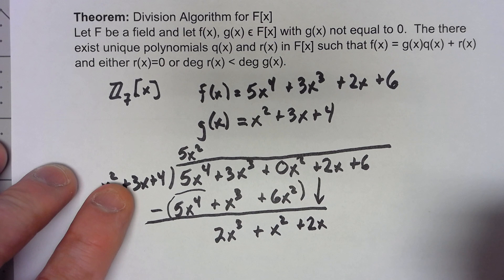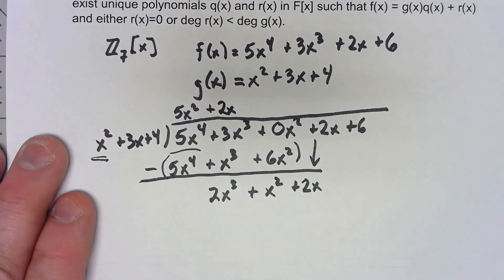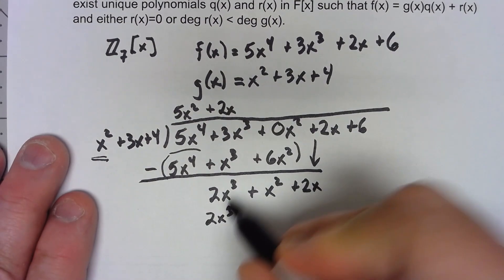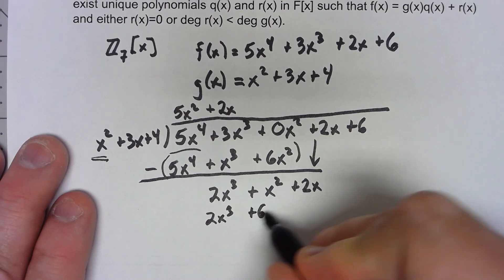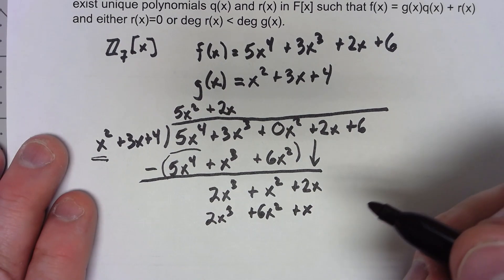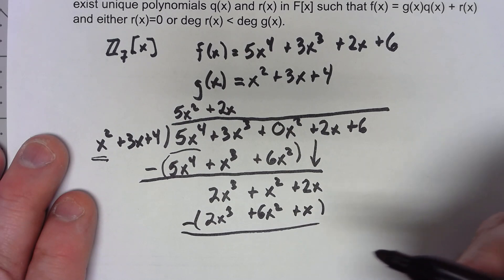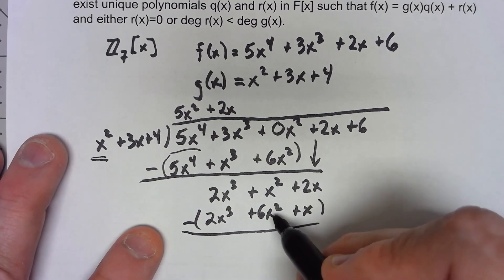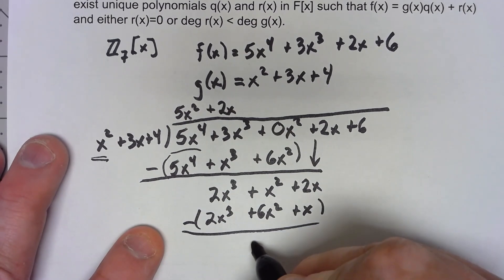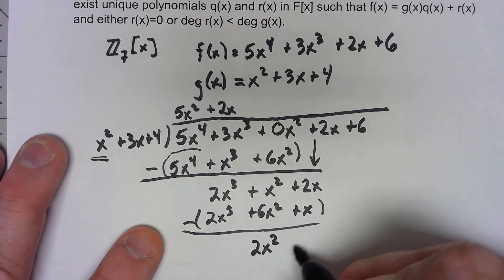The next thing that goes up top, we're going to have plus 2x. 2x cubed, plus 6x squared, plus 8x is really plus x, and we subtract. 2x cubed minus 2x cubed cancels. x squared minus 6x squared is going to give us 2x squared. 2x minus x is just going to give us x. Bring down the last thing.